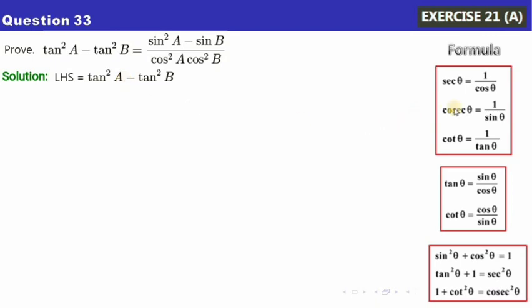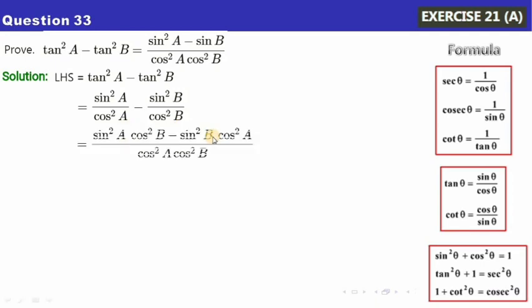We convert tan²A to sin²A/cos²A and tan²B to sin²B/cos²B. Now finding the LCM, which is cos²A·cos²B. Dividing the LCM by cos²A cancels cos²A, leaving cos²B, so we multiply cos²B with sin²A to get sin²A·cos²B. Dividing the LCM by cos²B cancels cos²B, leaving cos²A, so we get cos²A·sin²B.